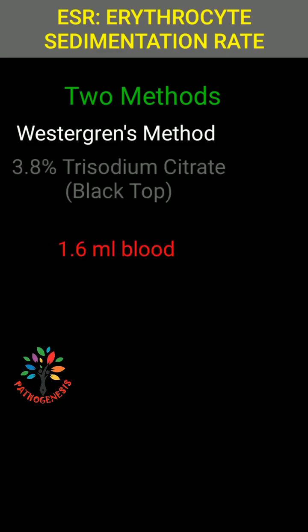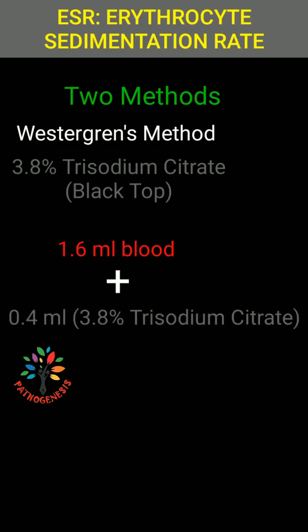We are going to mix 1.6 ml of blood with 0.4 ml of 3.8% trisodium citrate.